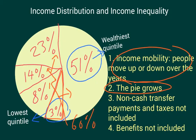Income distribution numbers also don't include non-cash transfer payments — for example, housing subsidies, food stamps, and government-subsidized medical insurance. These are not included, and they can add up to quite a bit of money each year. Taxes are also not included, and taxes are mostly paid by the higher quintiles. If we do include non-cash transfer payments and taxes, the income share of the lowest quintile triples, and the income share of the highest quintile falls by 25%, according to the latest census statistics.